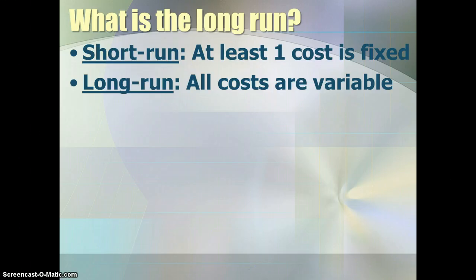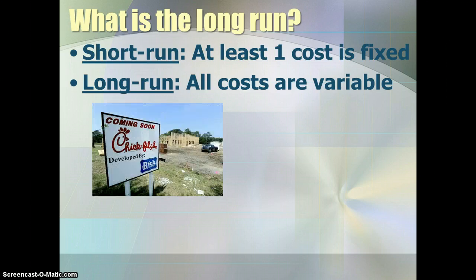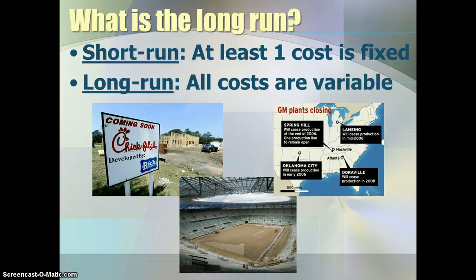As a reminder, the long run is where all of your inputs and costs are variable, whereas in the short run at least one of your inputs is fixed. In the short run you can't make some changes, but in the long run you can make as many changes as you would like — open a new store, close a plant, or open a new venue. In the short run, maybe you've got a lease that's fixed and there's nothing you can do until that lease is up.